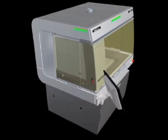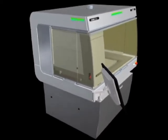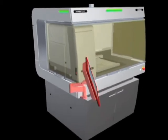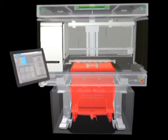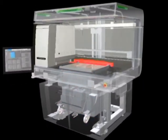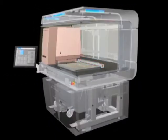Araldite Digitalis consists of three key elements: the operating console, the VAT enclosure with the re-coater, and the exposure system.